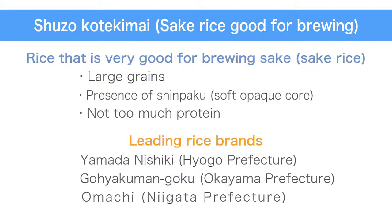The item I want to focus on in particular is raw ingredients. One of the terms on the label is shuzo kotekimai. Shuzo kotekimai means rice that is ideal for brewing. Ordinary table rice can also be used to make sake, but shuzo kotekimai is much better suited and makes the brewing process easier. Each variety of rice produces its own distinct flavor.